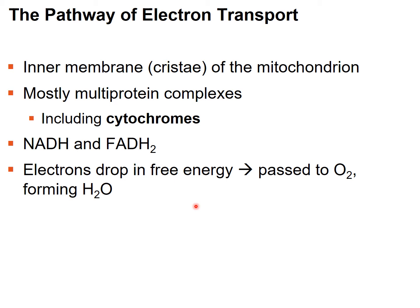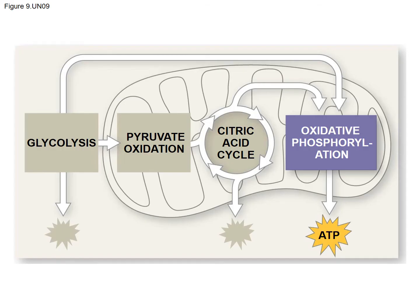The electrons are going to be passed to oxygen, which is the final electron acceptor in aerobic respiration. Once that occurs, water is produced. As the electrons are dropping in free energy, there's also transport of protons across the gradient, creating an electrochemical gradient. NADH and FADH2 drop the electrons off at the electron transport chain in the process of oxidative phosphorylation — where the majority of ATP is produced, about 90%.